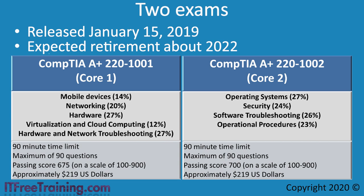CompTIA recommends having 6 to 12 months of experience in the lab or in the field before attempting either exam. The passing score is 675 for the 1001 exam and 700 for the 1002 exam, with both exams scaled to 900. Each exam costs approximately $219 US dollars, so about $438 US dollars total for both exams. The cost may vary depending on which country you are in.